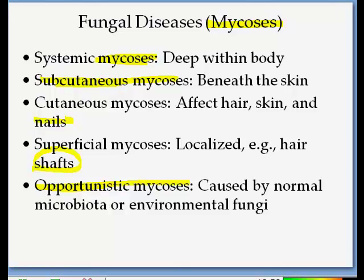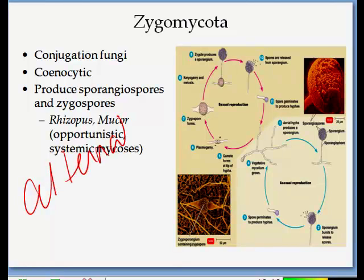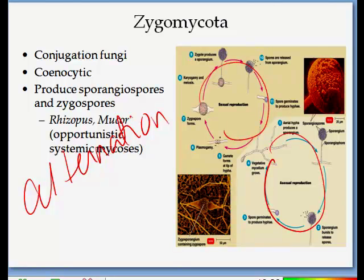The next slide shows the life cycle of Rhizopus, which is an opportunistic mycosis, and how it undergoes alternation of generation — alternating between a sexual generation and an asexual one.